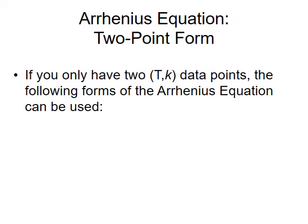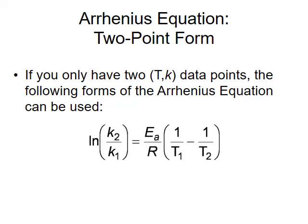The last example required many data points of temperature and rate constant. If you only have two data points, you can still use the Arrhenius equation — you just have to use a slightly different form. This is the two-point form, where the natural log of a ratio of two rate constants, K2 and K1, equals the activation energy divided by the gas constant R, times the difference between the inverse values of two temperatures, T1 and T2. We can use this form to calculate activation energy, an unknown rate constant, or temperature. The frequency factor is not part of this equation, and we can't solve for it using the two-point form.